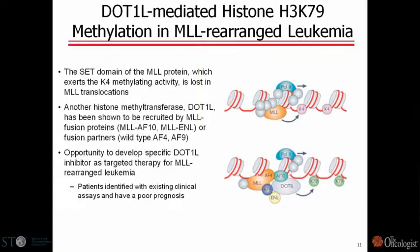DOT1L is a lysine methyltransferase causally involved in mixed lineage leukemia. In essentially 100% of patients with mixed lineage leukemia, there's a translocation of the MLL gene. MLL is normally a lysine methyltransferase that methylates histone H3 on lysine 4. In the context of the translocation, the active site of MLL is lost, there's a fusion to AF or ENL proteins, and DOT1L is aberrantly recruited to different gene locations where it catalyzes methylation of lysine 79. Our expectation is that in cells containing the MLL translocation, a DOT1L inhibitor would be cytotoxic, while in non-rearranged cells it would not have an antiproliferative effect.